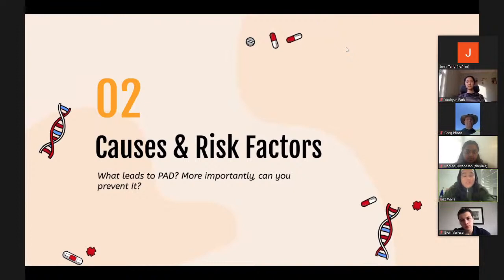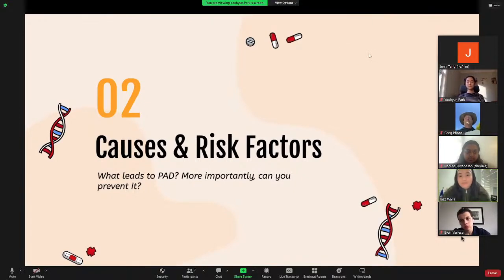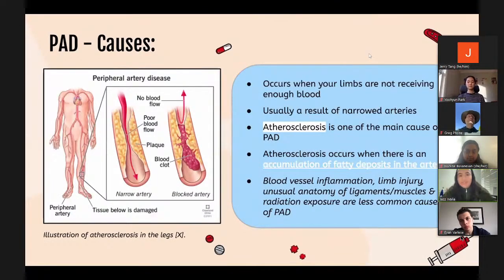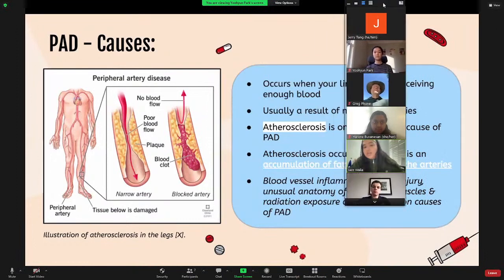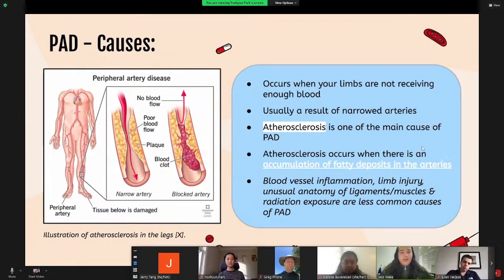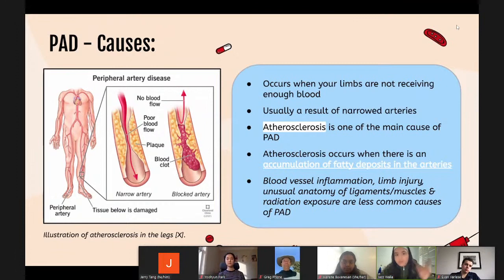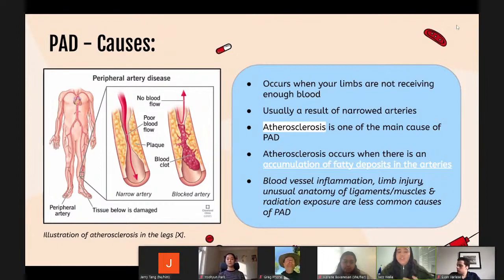Now we'll talk about causes and risk factors of PAD. Simply put, PAD occurs when your limbs are not receiving enough blood to keep up with your body's demands, usually a result of narrowed arteries reducing blood flow — indicative of an accumulation of fatty deposits, or plaque, in your arteries, known as atherosclerosis. This mainly reduces blood flow to your legs but can also affect your arms. Less common causes include blood vessel inflammation, injury to your limbs, unusual anatomy of your ligaments or muscles, and radiation exposure.